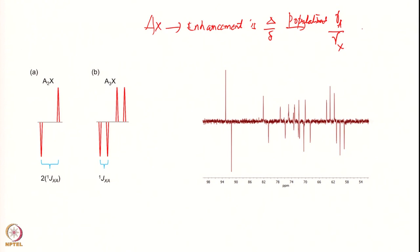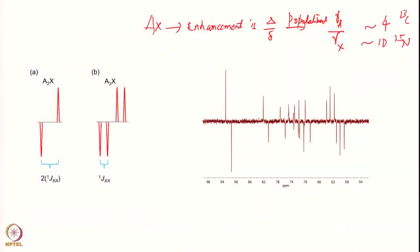However, we still have the problem of positive-negative lines — that continues. We have not gotten over that problem. But we have gotten over the selectivity issue — we do not need to apply a selective pulse anymore. We apply a hard pulse and get the same result: intensity enhancement, and now we have identical intensities for both lines in the X doublet. Earlier in SPI we did not have similar intensities for the two lines; now here we get similar intensities for both lines in the X spin.